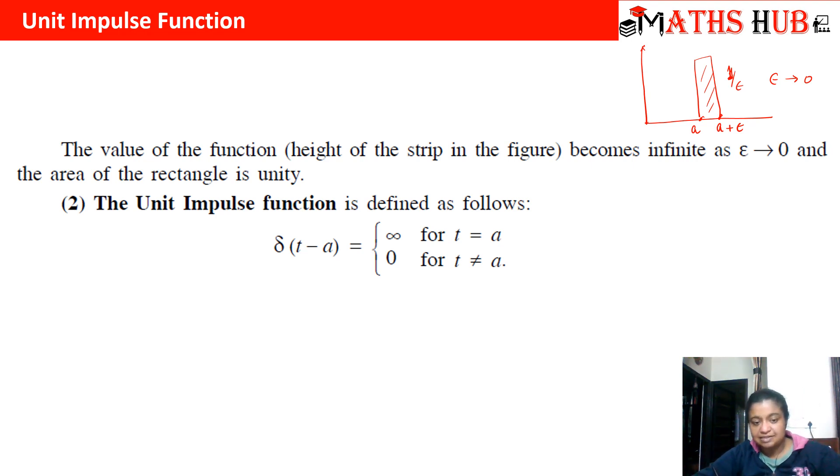It is defined as delta t minus a: it is 0 when t is not equal to a, and it is infinity when t equals a. When we see the integration of this function from 0 to infinity, since the area is 1, we will get the integral value to 1.